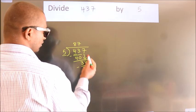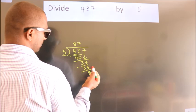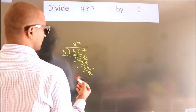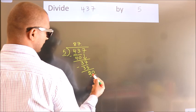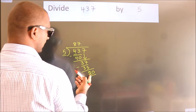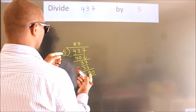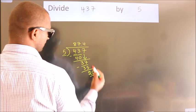After this, no more numbers to bring it down. So what we do is, we put dot, take 0. So 20. When do we get 20 in 5 table? 5 fours 20.